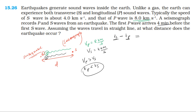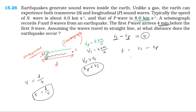So the difference is: time taken by the S wave minus time taken by the P wave equals 4 minutes. Speed is equal to distance by time taken, so time is equal to distance by speed. Time taken by the S wave is d divided by speed of S wave, minus time taken by the P wave is d divided by speed of P wave, where d is the distance between where the earthquake occurred and where the seismograph is placed.